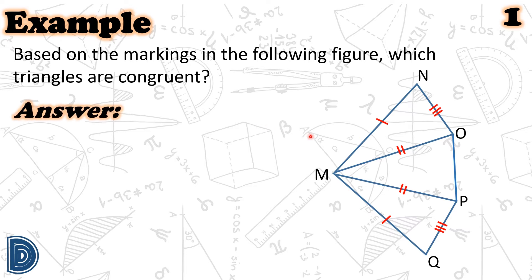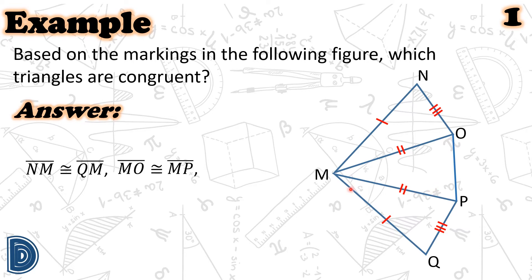For our answer, we will observe that segment NM and segment QM have the same markings. Therefore, segment NM is congruent to segment QM. Also, we see that segment MO and segment MP have the same markings. Therefore, segment MO is congruent to segment MP.